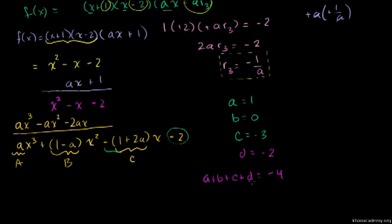If a is equal to -1, then the coefficients are: a equals -1, b equals 1 minus a, which is 1 minus (-1) equals 2. c equals 1 + 2a, which equals 1 + 2(-1) equals -1. And a + b + c + d equals -1 + 2 + (-1) + (-2) equals -2.